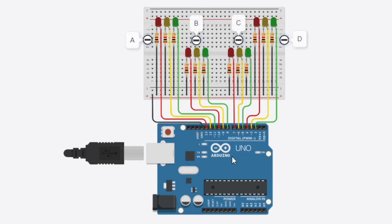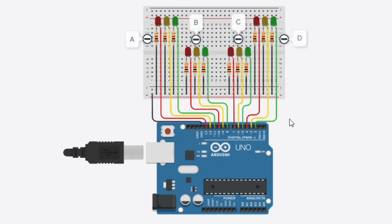I'm going to tell you about the components that I use. This one is Arduino Uno R3. The grey one is a breadboard small. This one is an LED. This one is a resistor. The line one is wire.